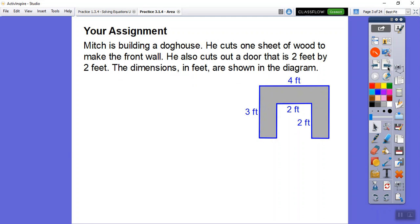Here we go. Mitch is building a dog house. He cuts out one sheet of wood to make the front wall, and here's this sheet of wood right here. Then he also cuts out this doorway right there that's 2 by 2. The dimensions in feet are shown.